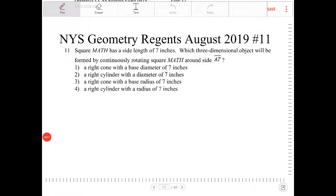Square MATH has a side length of seven inches. Which three-dimensional object will be formed by continuously rotating square MATH around side AT?